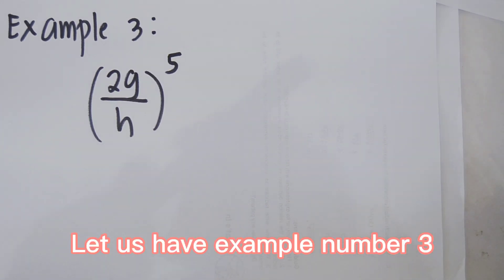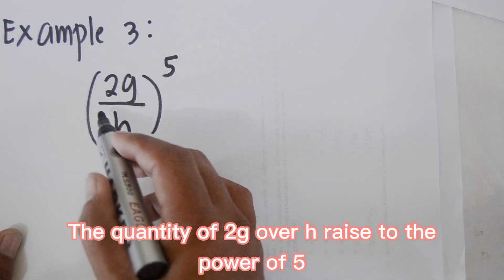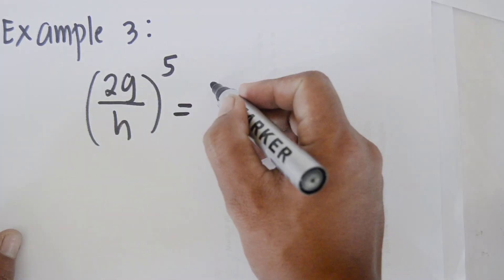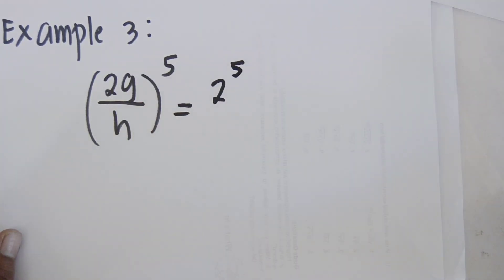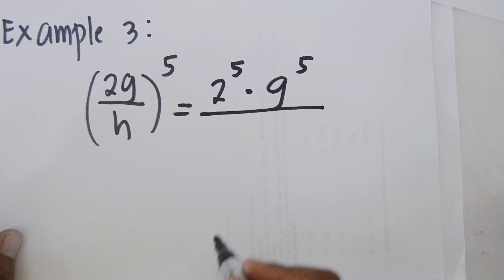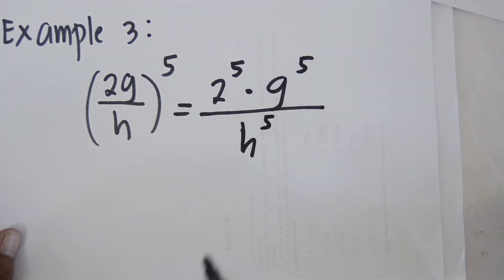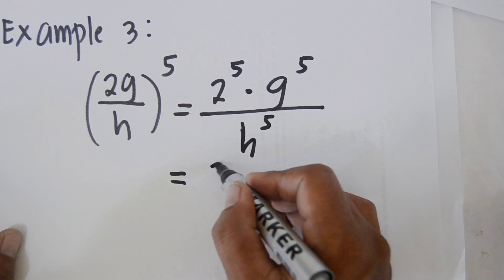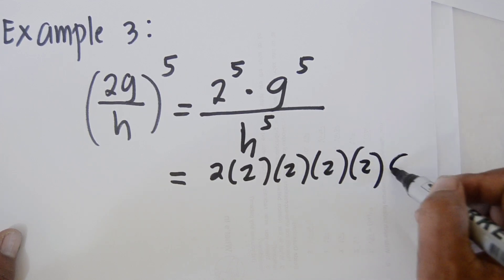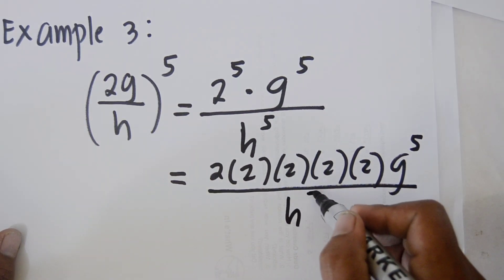Example number 3: the quantity of 2g over h raised to the power of 5. Distribute 5 to each term. So we have 2 raised to the power of 5 times g raised to the power of 5, and in the denominator, h raised to the power of 5.